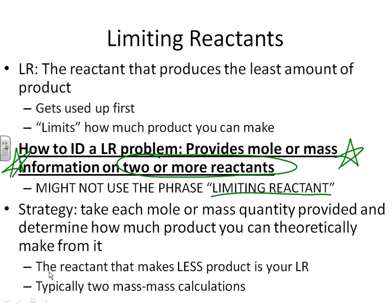Once you realize that we have mass or mole information on two or more reactants, what we have to do is figure out, based on each of those numbers, how much product you can theoretically make from each one. Once you've taken both numbers — the 10 grams of reactant A and 20 grams of reactant B — and figured out how much product C each will get you, you've essentially answered the question. The reactant that makes less product is the limiting reactant, and the amount of product made by the limiting reactant is your theoretical yield. A limiting reactant problem is simply two mass-mass calculations.